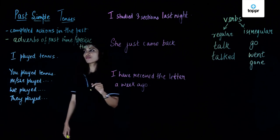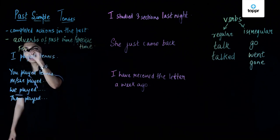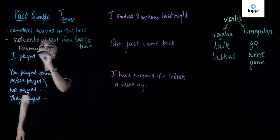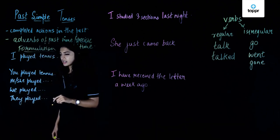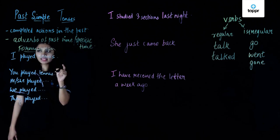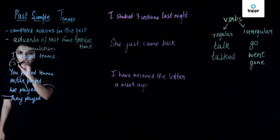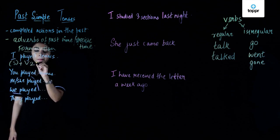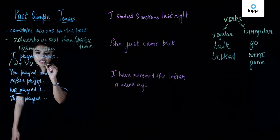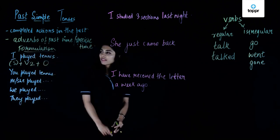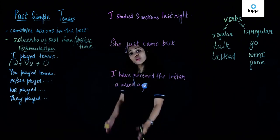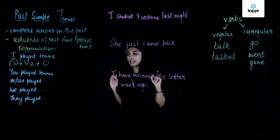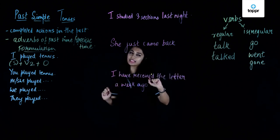Let's look at its formulation. The structure is: subject plus the V2 form of the verb (the past form) plus the object. For example: I played tennis, you played tennis, he or she played tennis, we played tennis, they played tennis.